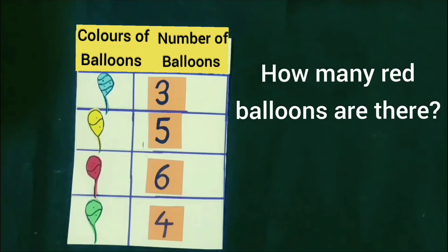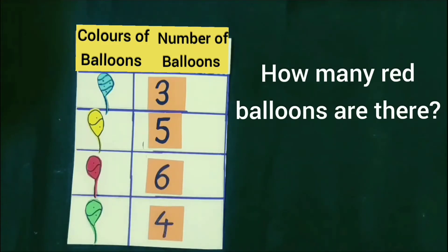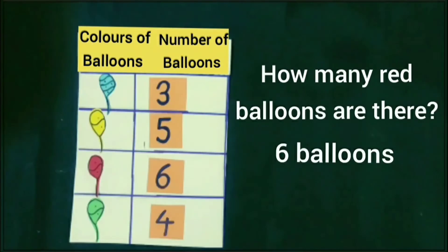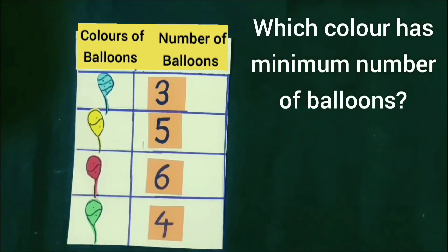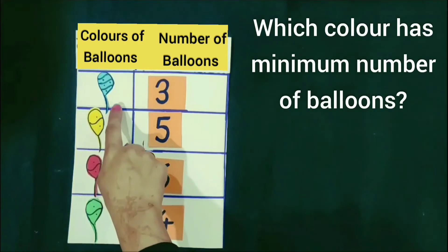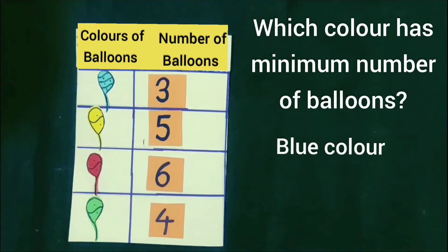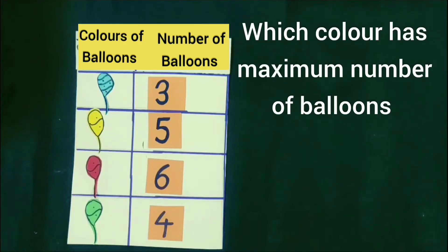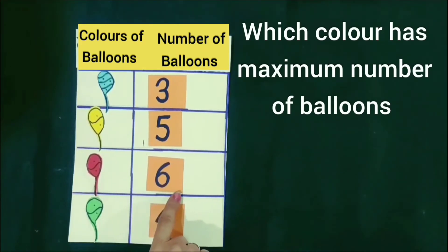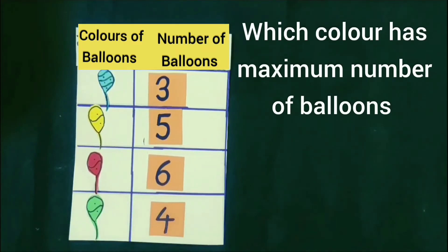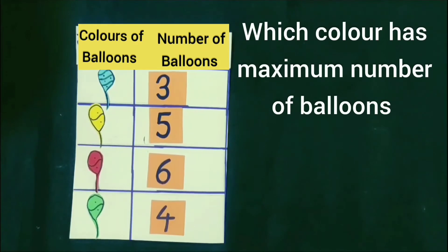Now, tell how many red balloons are there. Look at the chart. There are six balloons. Next question is which color has the minimum number of balloons. Look at the chart. Blue color has only three balloons. So, the answer of this question is blue color. Next question is which color has the maximum number of balloons. Look at the chart. There are six balloons of red color. So, the answer of this question is red color.